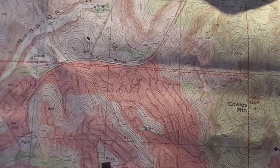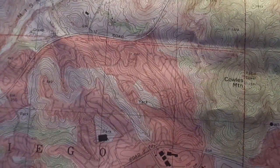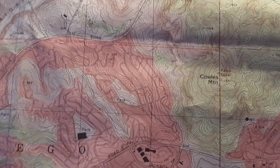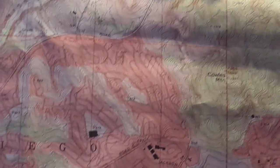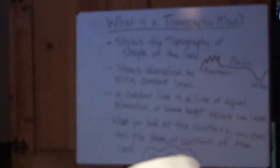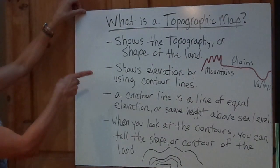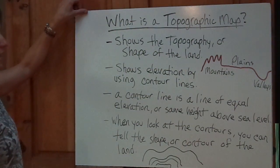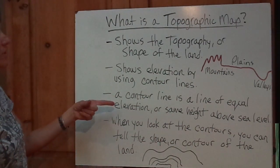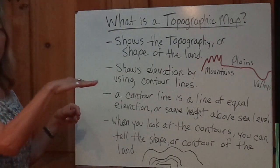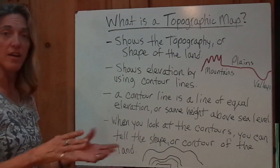How do you know if the land is steep or flat? How do you know if there's a canyon or a mountain top? How do you know if there's a stream and which way it's flowing? A topographic map shows topography and elevation by contour lines. A contour line is a line of equal elevation — same height above sea level. When you read the contours, you can tell the shape of the land.